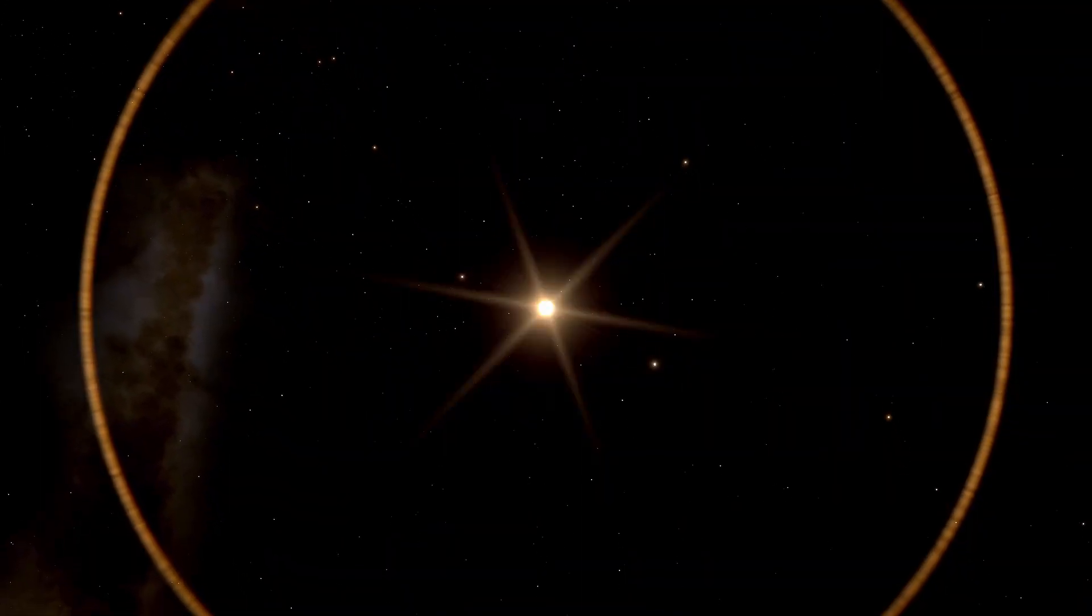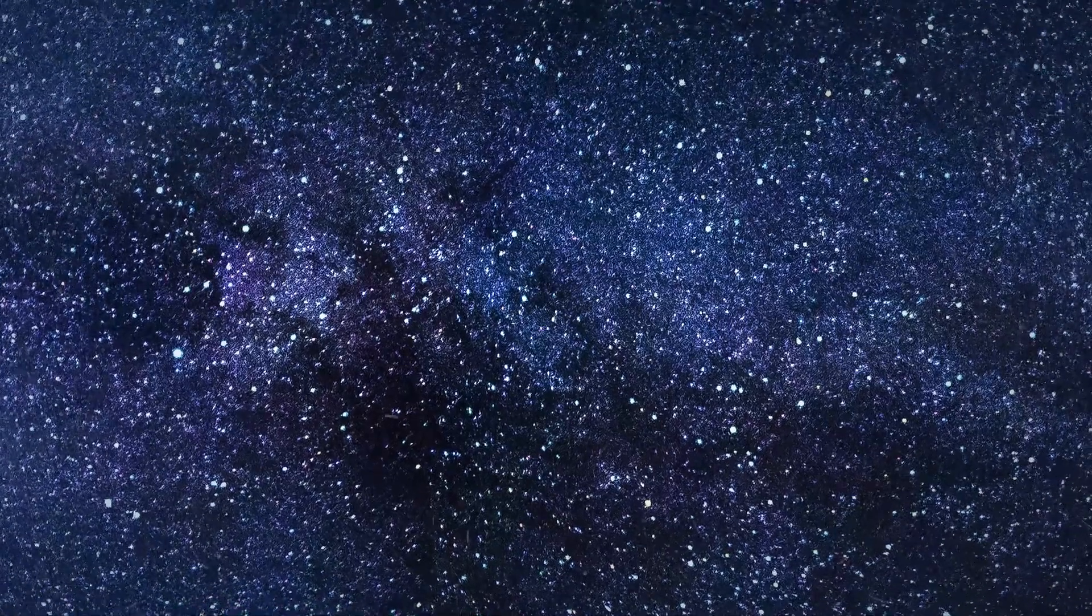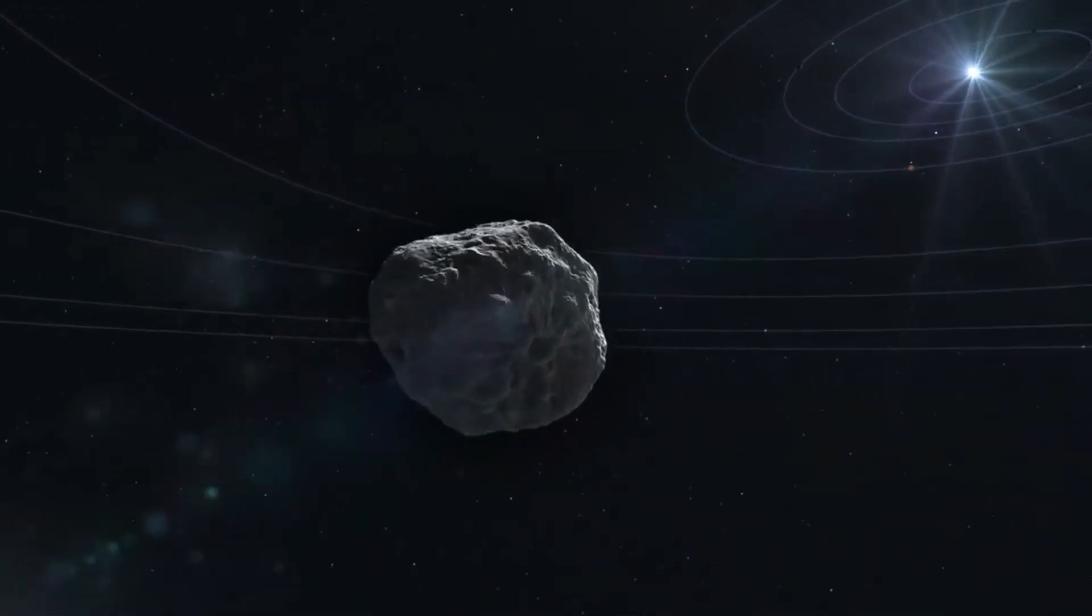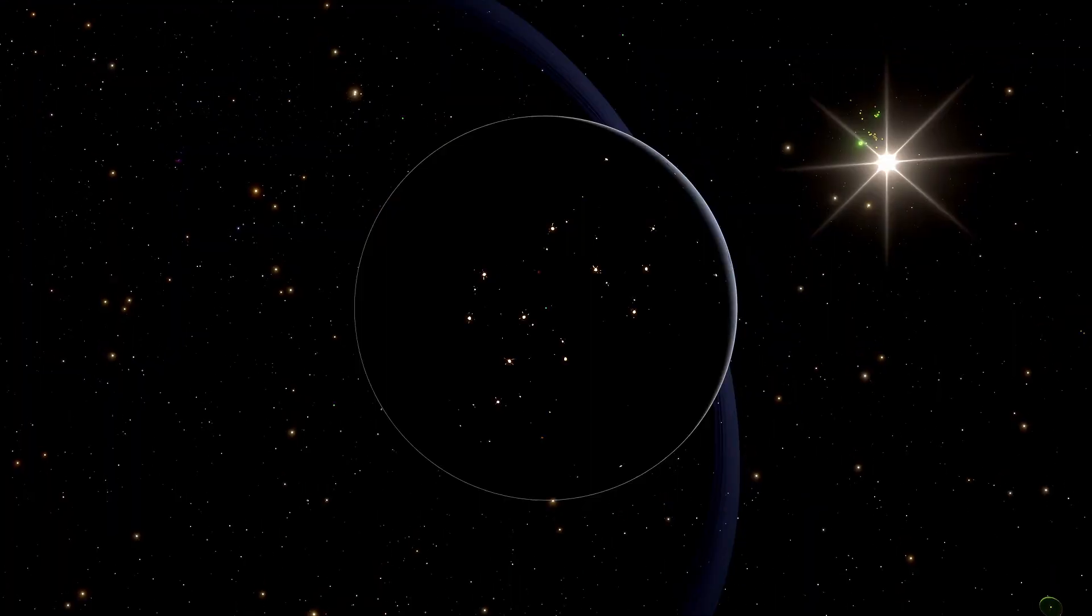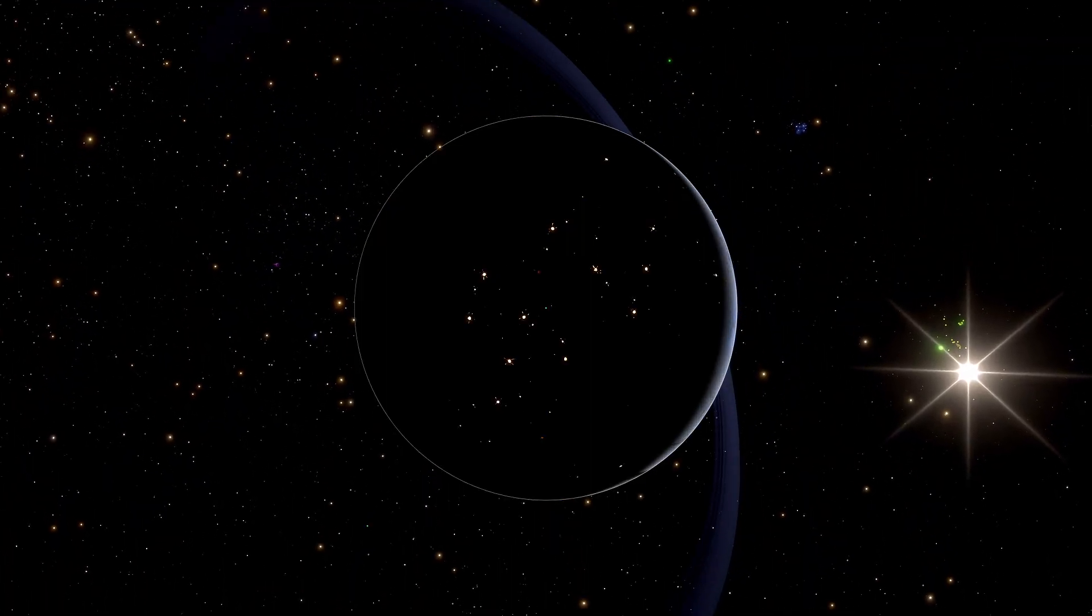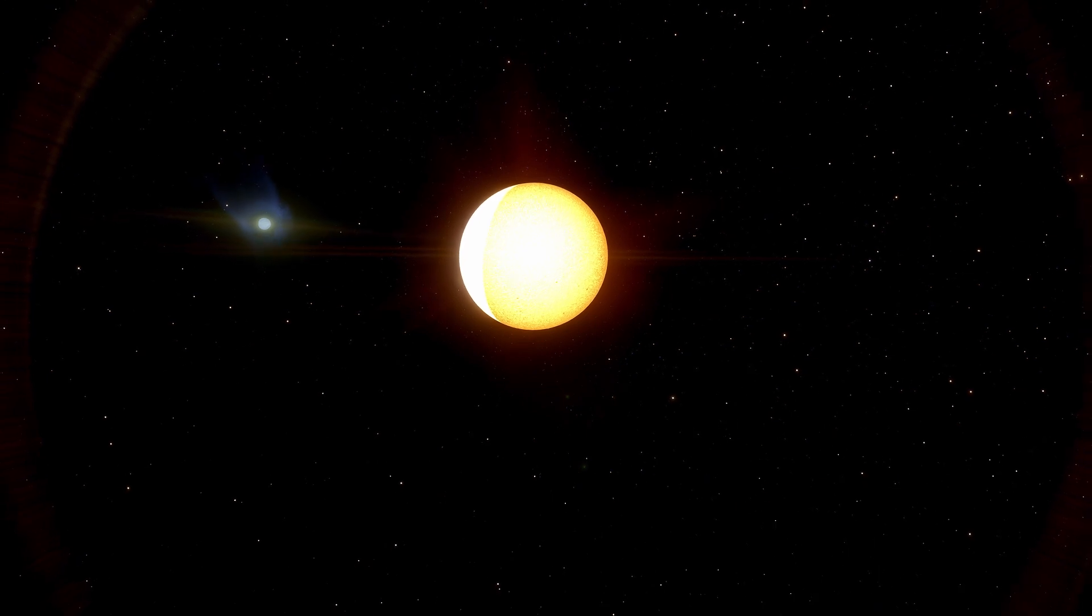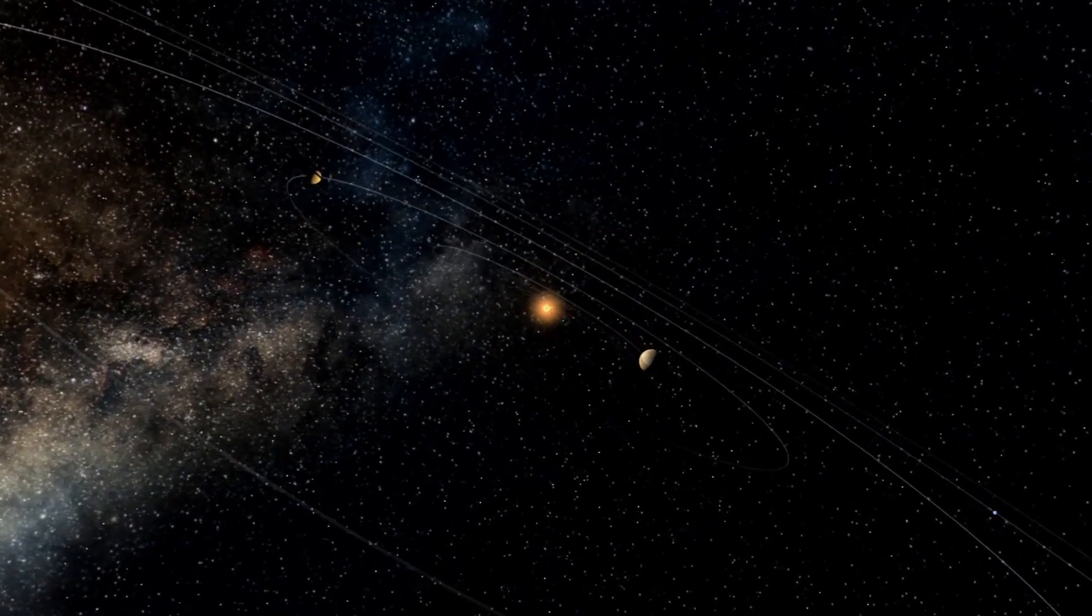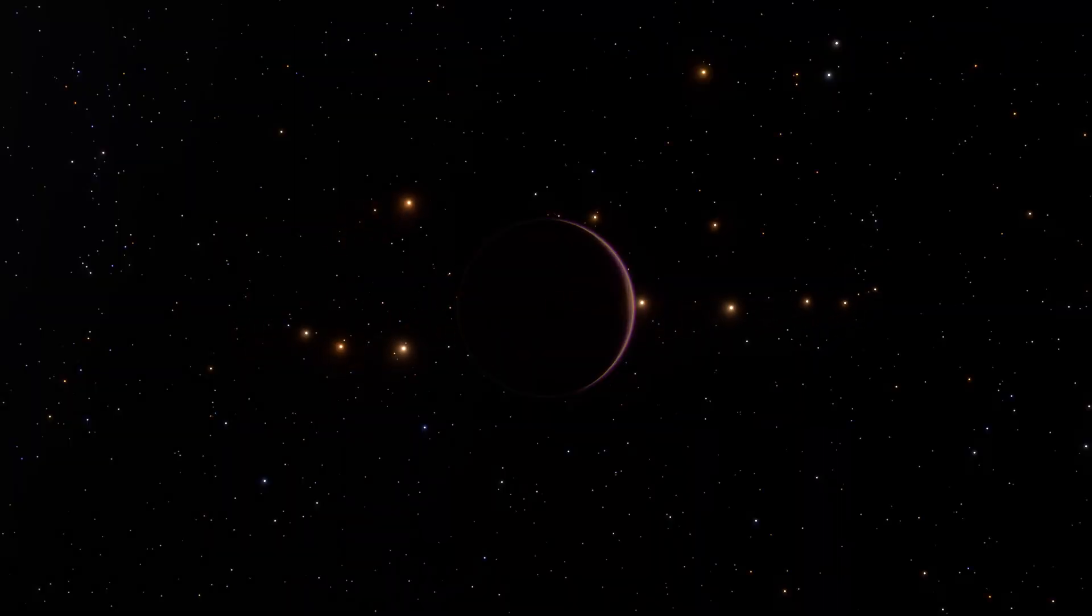That's when the panic started spreading across control rooms. Every simulation, every gravitational model, every known natural explanation failed instantly. It didn't react to the sun's pull. It didn't break apart from heat or tidal stress. It simply turned and locked onto a new vector heading deeper into the inner solar system.